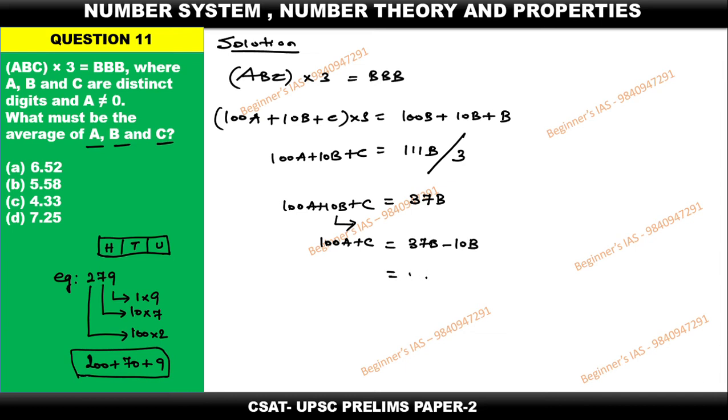Subtract 10B: 100A + C = 27B. Now we have to move on with the trial and error method. Listen carefully: A is not equal to zero. If A = 1, obviously the LHS is going to be more than 100.